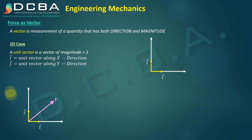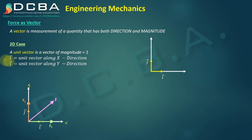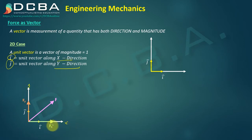Consider a force which is inclined with the x axis at a certain angle. What we can do is resolve this force into its two components Fx and Fy. We always need the horizontal component and the vertical component to express a force in vector form, because we have defined unit vectors along the x direction and y direction — that is why we need force components in the x and y directions.